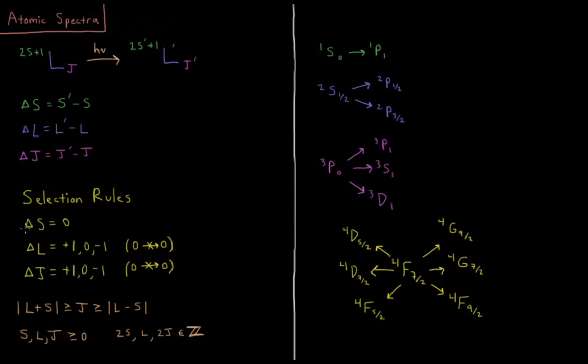First rule, delta s equals zero. So singlets go to singlets, doublets go to doublets, triplets go to triplets. So whatever it is for 2s plus 1, it's going to stay that. The multiplicity and the value of s is going to stay the same.